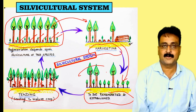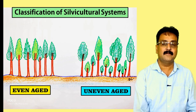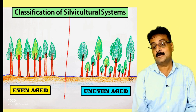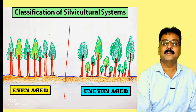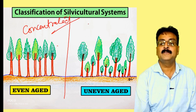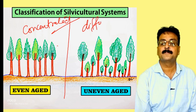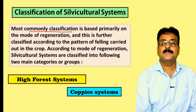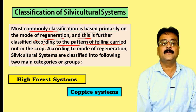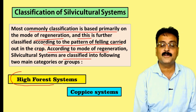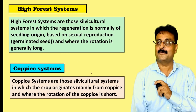Silviculture systems are classified based on even-age and uneven-age, and also coppice systems. Even-age systems are classified under concentrated regeneration, while uneven-age systems fall under diffuse regeneration. The most common classification is based primarily on the mode of regeneration, further classified according to the pattern of felling. According to the mode of regeneration, silviculture systems are classified into two main categories: high forest and coppice forest.